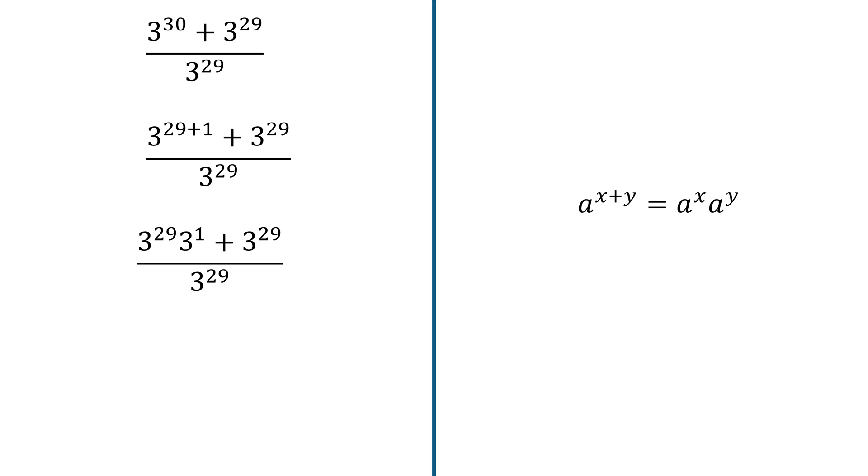So we realize there are 3 of the 3 exponent 29 in the expression. So we'll factor 3 exponent 29 from the top.